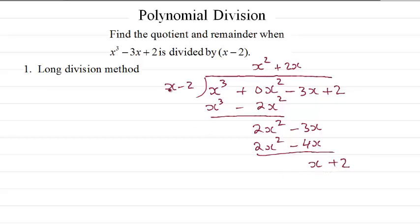Remainder: minus 3 minus minus 4 is 1x. Bring the last term down. Now we need to multiply this x by 1 to get x here, so we write the one there. So 1 times minus 2 is minus 2. X minus x is nothing. 2 minus minus 2 is 4. So this is our quotient and this is our remainder.